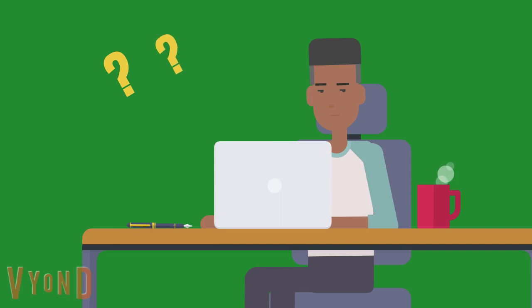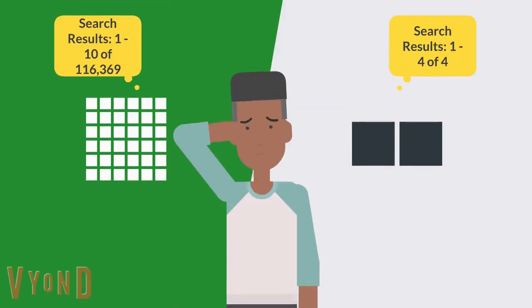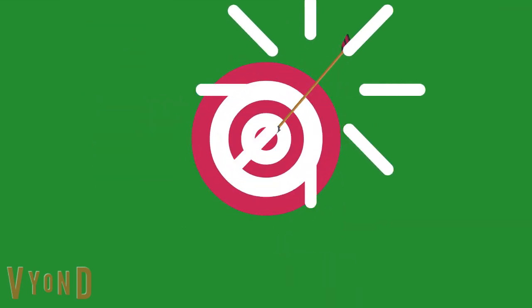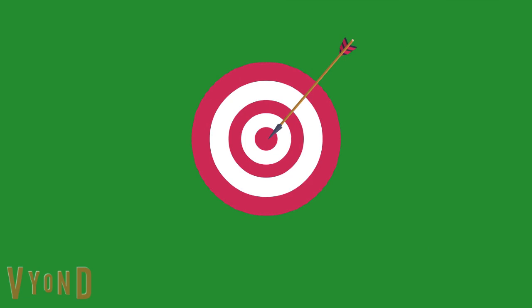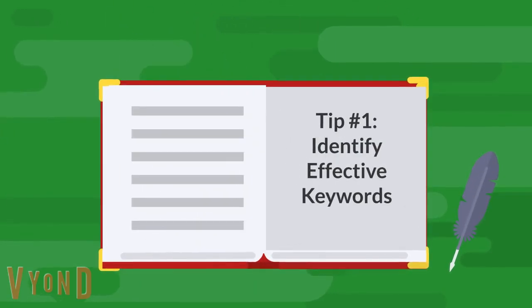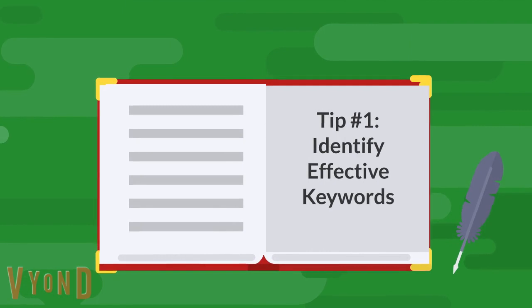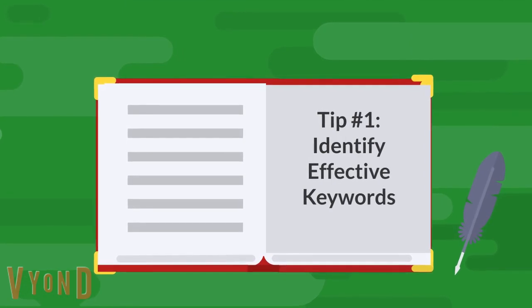On my Google library, databases are picky about search terms — you may get too many or very few search results. Here are three tips to make you a better searcher. Tip number one: identify effective keywords. Keywords are the key concepts of your topic question.